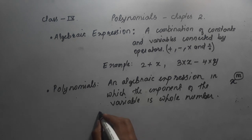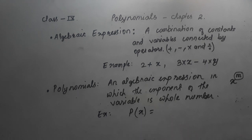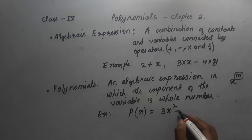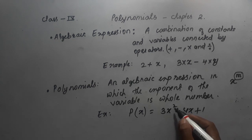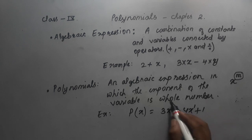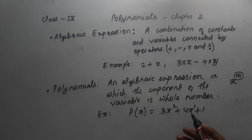We denote polynomials as p(x) or q(x). For example, q(x) = x² + 4x + 1 is a polynomial, because the exponents of x are whole numbers — not negative numbers or fractions.